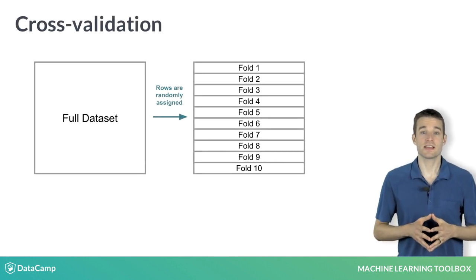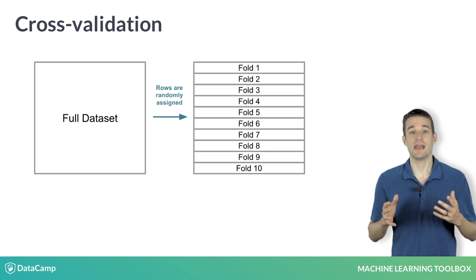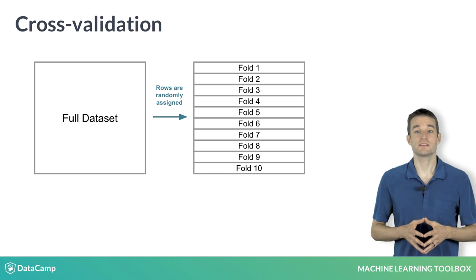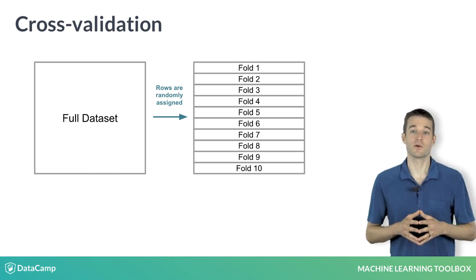We assign each row to its test set randomly to avoid any kinds of systematic biases in our data. This is one of the best ways to estimate out-of-sample error for predictive models.